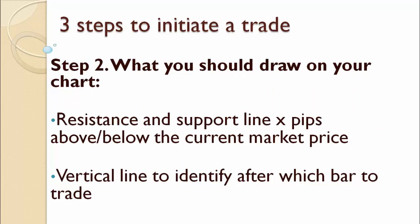Step 2: What you should draw on your chart. It depends on the pattern you trade. If you are waiting for the market to move higher or lower than a certain level, you need to place a resistance line X pips above the current market price — it helps you signify where the market would have moved too far for a profit. Do the same with the support line beneath the current level. If you trade a time pattern, you just need to draw a vertical line to identify after which bar you are going to initiate a trade.